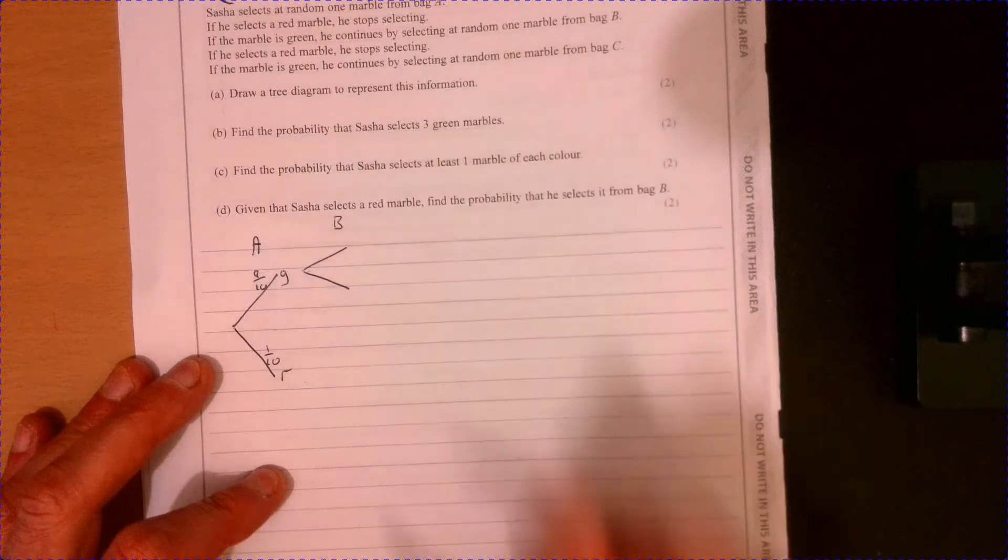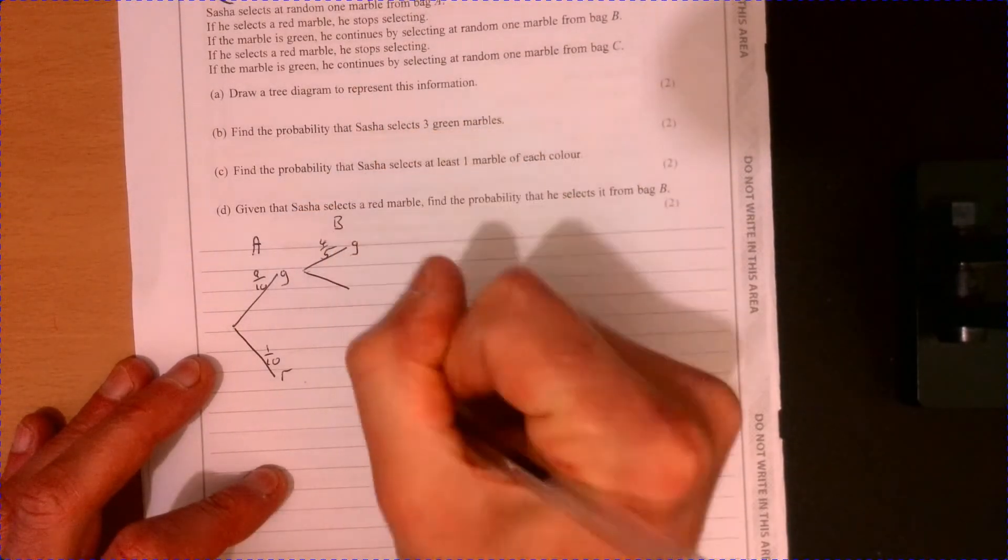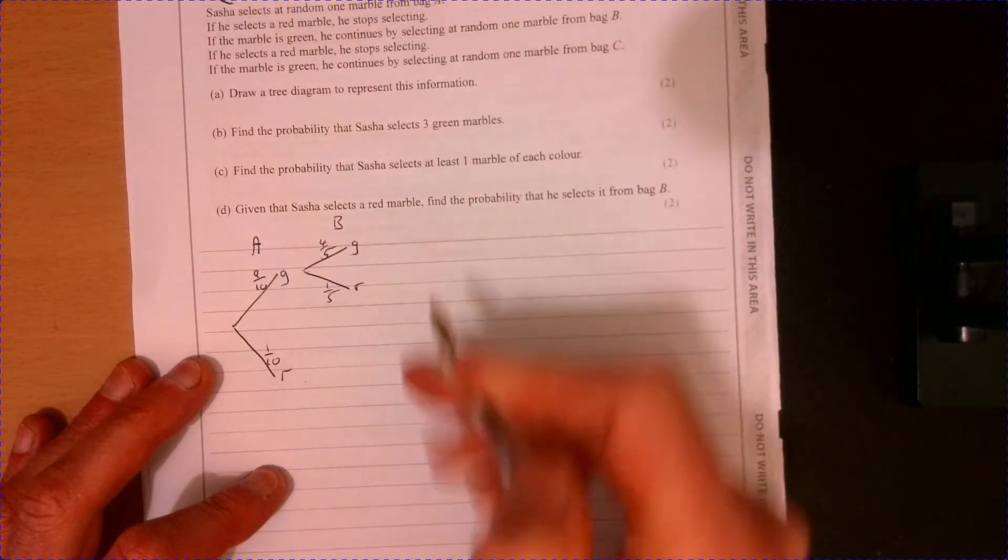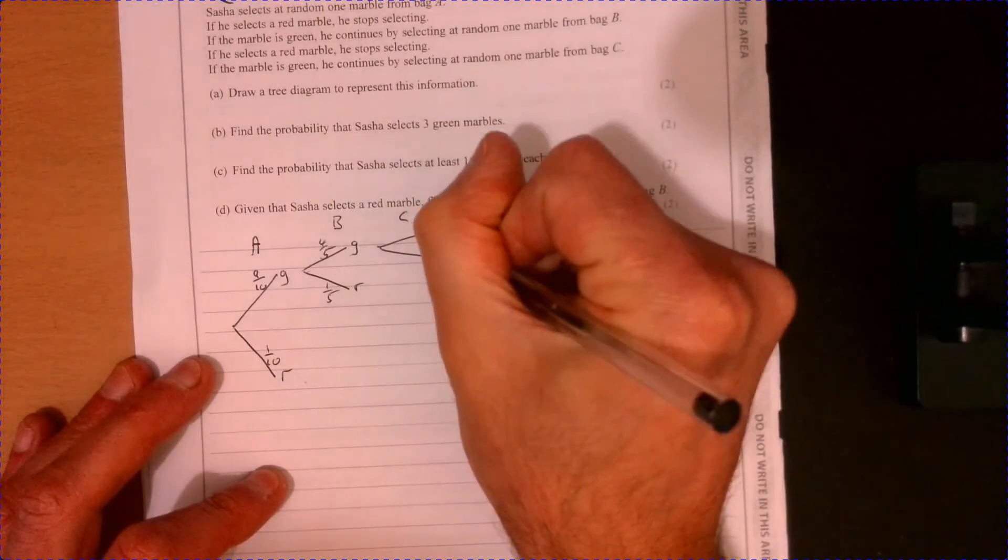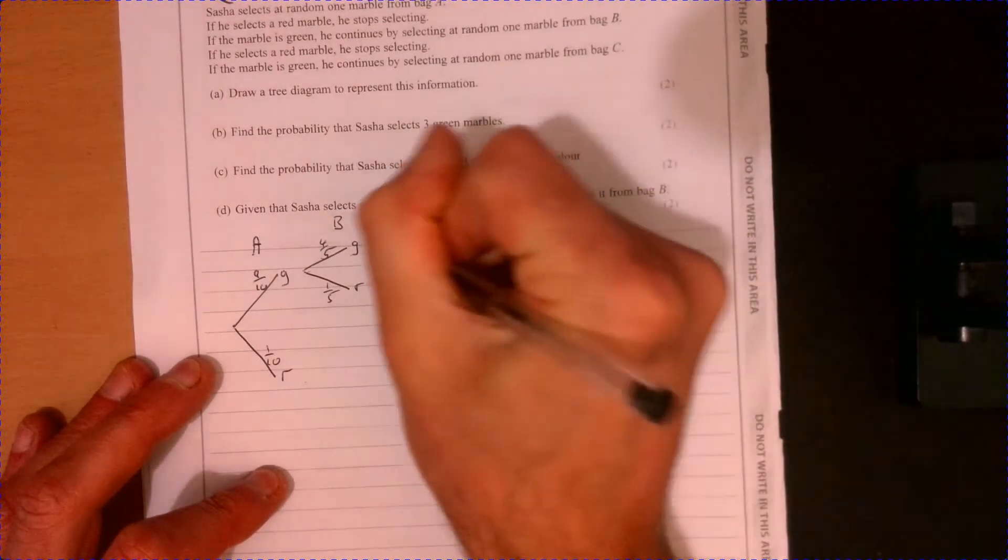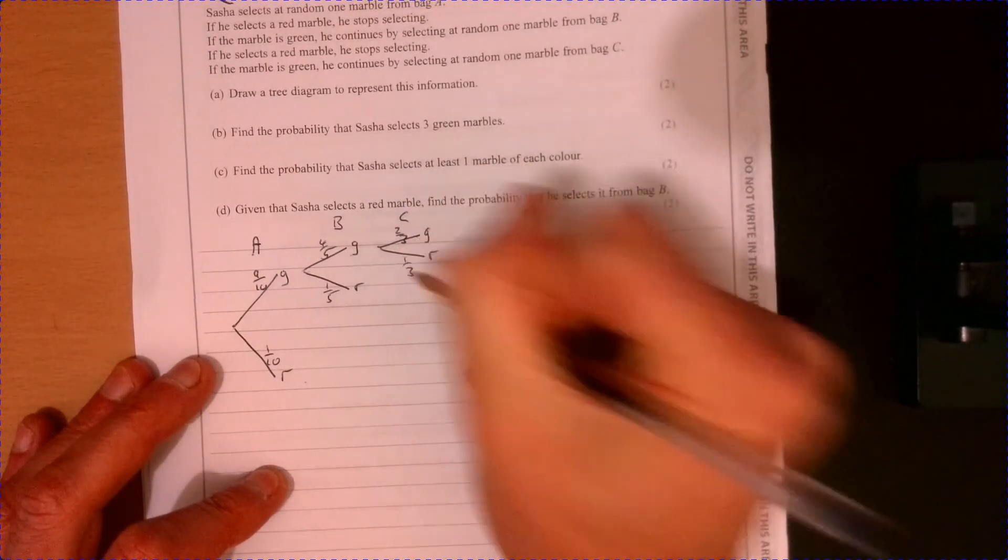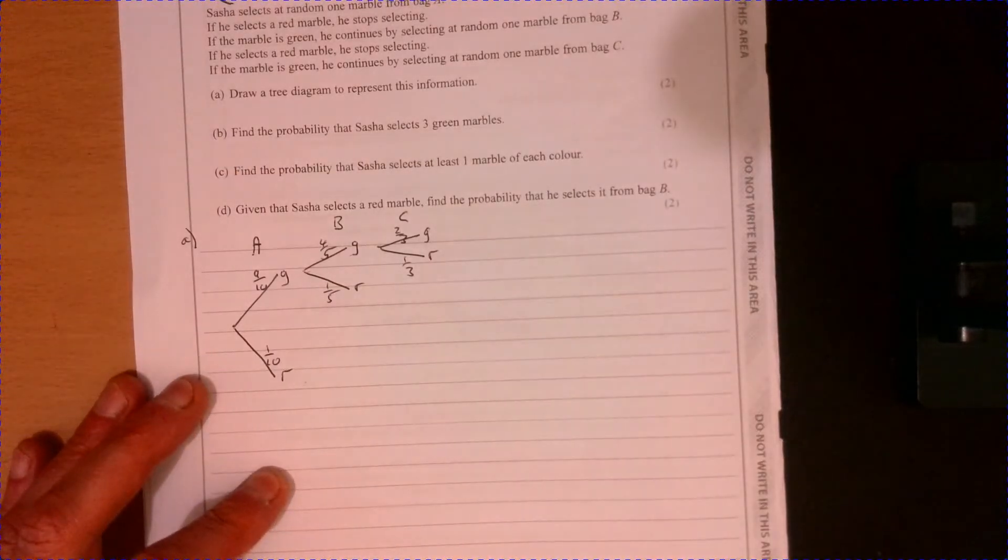So this is bag B. That's four over five for green, one over five for red. We stop there. And then we would carry on with bag C. So green, red, two over three, one over three. Okay, so that's part A done.